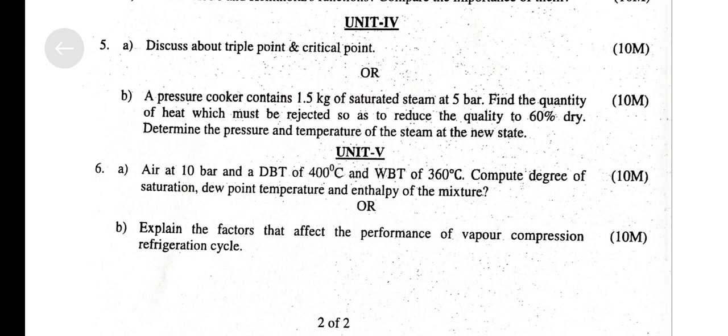Moist air at 10 bar, dry bulb temperature of 400°C and wet bulb temperature of 360°C. Compute the degree of saturation, dew point temperature, and enthalpy of the mixture. Explain the factors affecting the performance of a vapor compression refrigeration cycle.